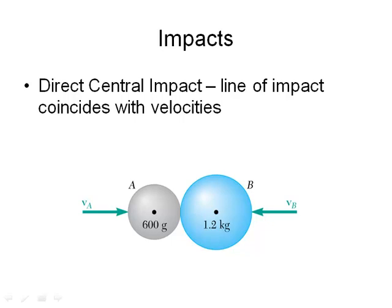All right, there are two types of impacts that we're going to look at. And in this particular lecture, we're looking at direct central impacts. And you can see by the definition here, what that means is the line of impact, which I'll explain in just a moment, coincides with the velocities. And so here's two spheres, and both of the spheres are moving towards each other in such a fashion that their velocities create a single line. So the point of impact between these two spheres is right there.